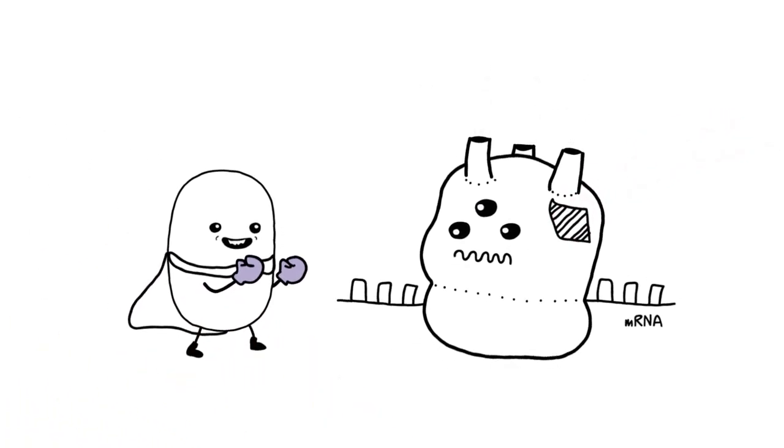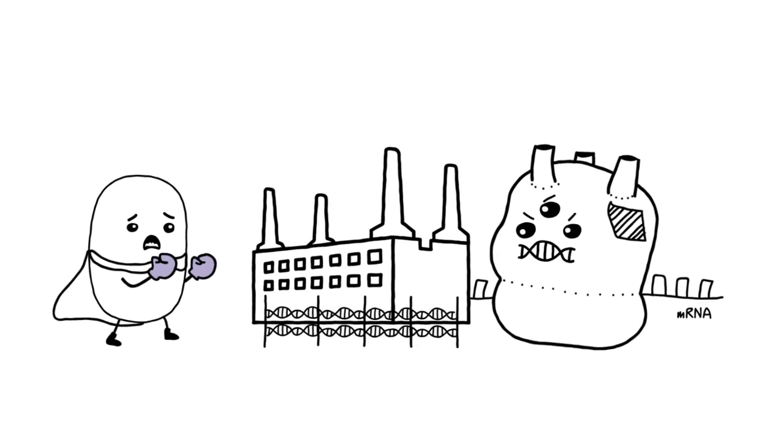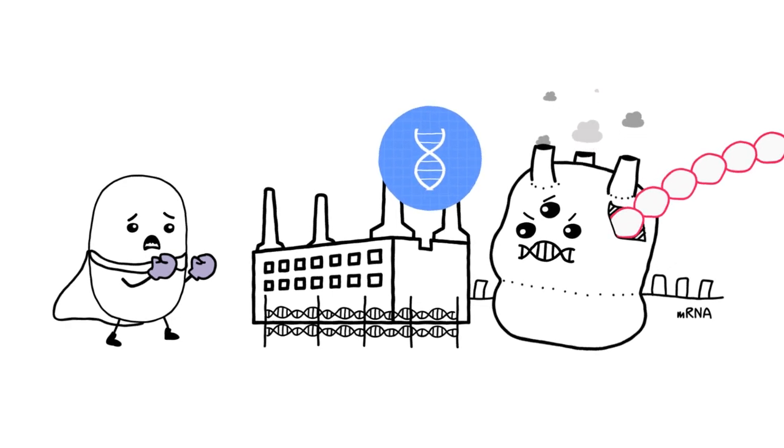Antibiotics shut down the production lines by disrupting essential functions of the bacterial cell. Resistance occurs when the bacterial cell can keep its production lines running due to changes in the genomic blueprint.